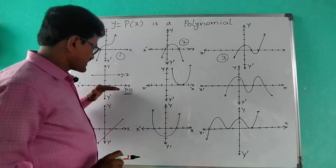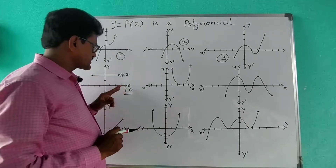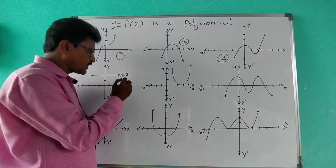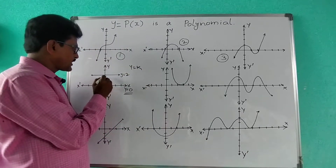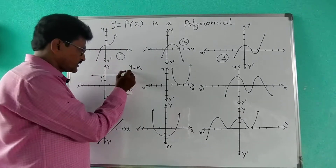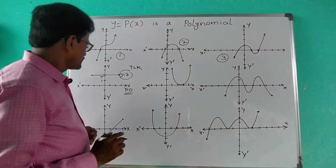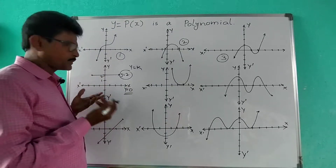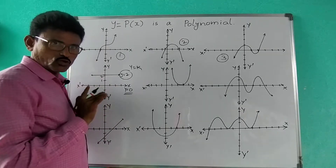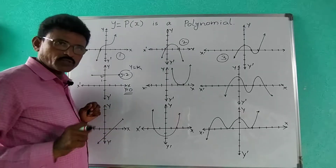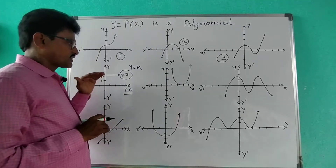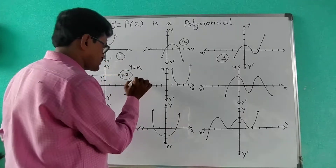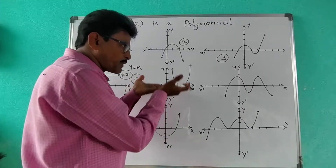For this graph, there is a line parallel to the x-axis. The x-axis means y = 0, and x = 0 is the y-axis. A line parallel to the x-axis is y = k. Here suppose this is y = 2, which is parallel to the x-axis. It never touches the x-axis, so the number of zeros is zero — no zeros — because it is a constant polynomial. For constant polynomials there are no zeros. Now this parabola opens upward, touching at only one place, so the number of zeros is one.